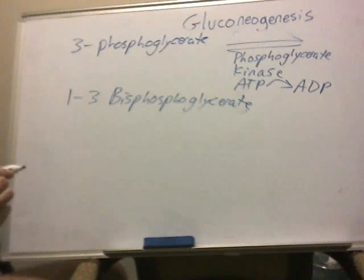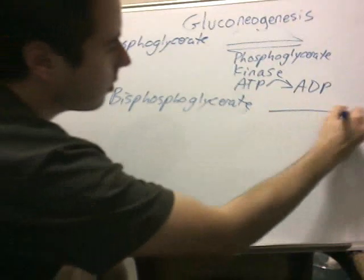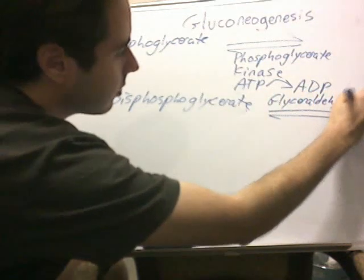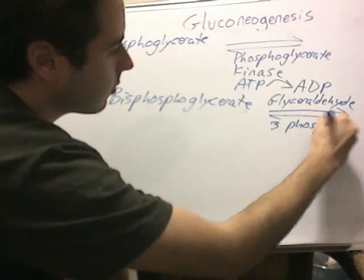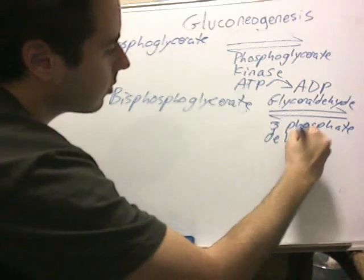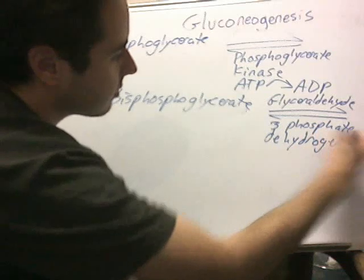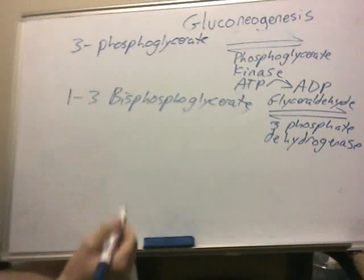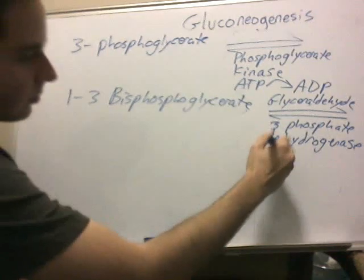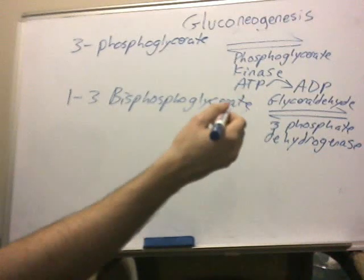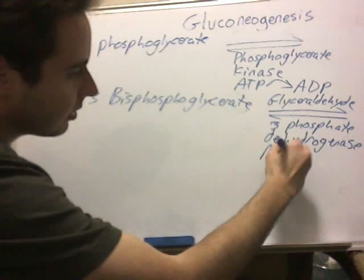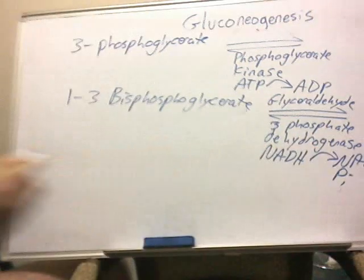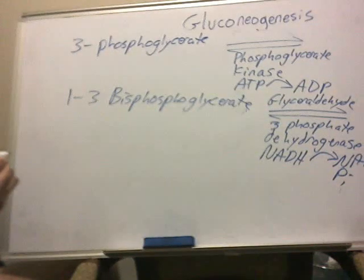And from there, we're going to use glyceraldehyde-3-phosphate dehydrogenase. A lot of the enzymes we're using here are not the same as what we did before — it's not the exact reciprocal of glycolysis. Remember before we had NAD+ and inorganic phosphate going to NADH. This time we're going to have NADH going to NAD+ and inorganic phosphate. From there, we're going to have glyceraldehyde-3-phosphate.